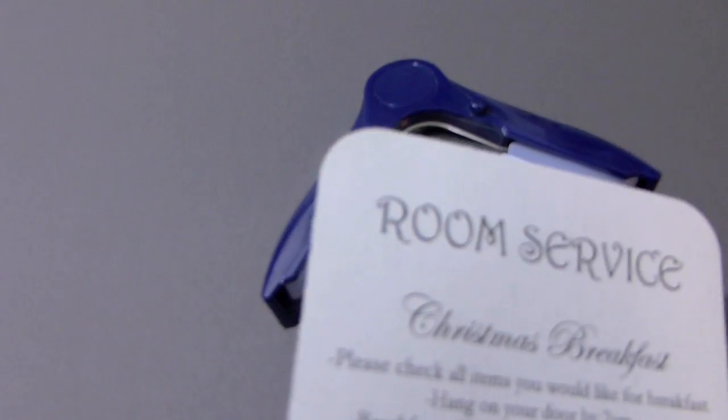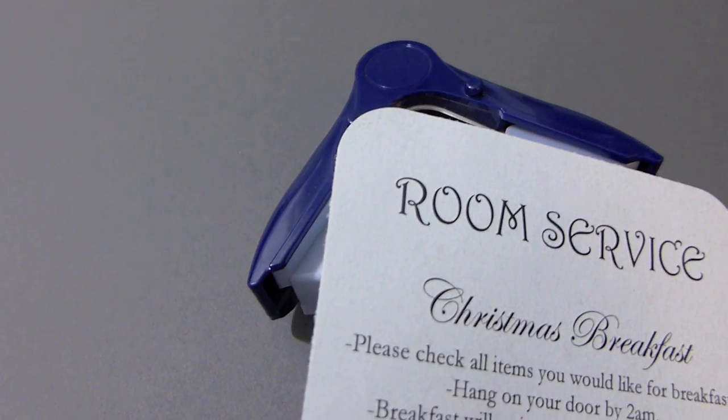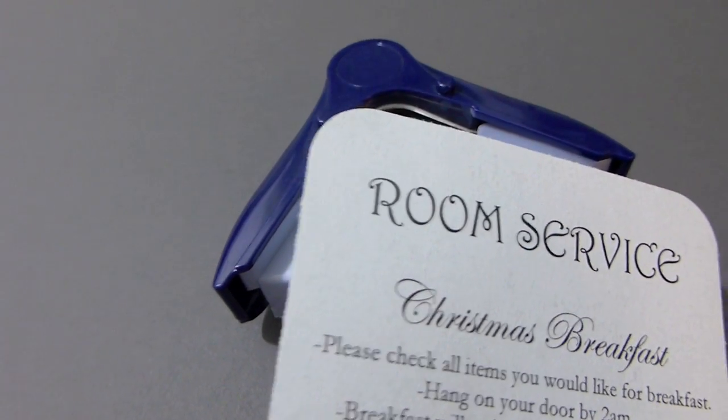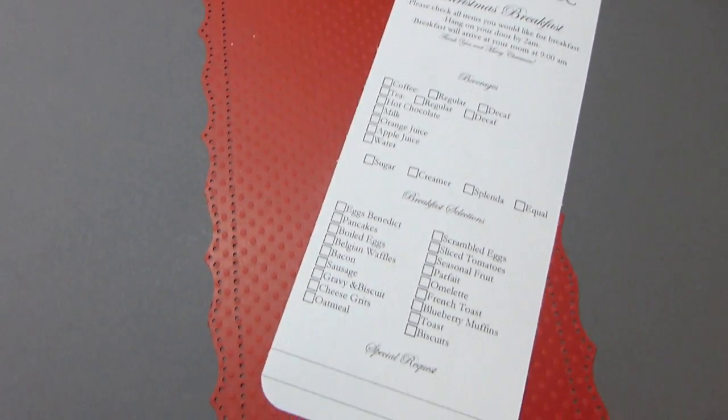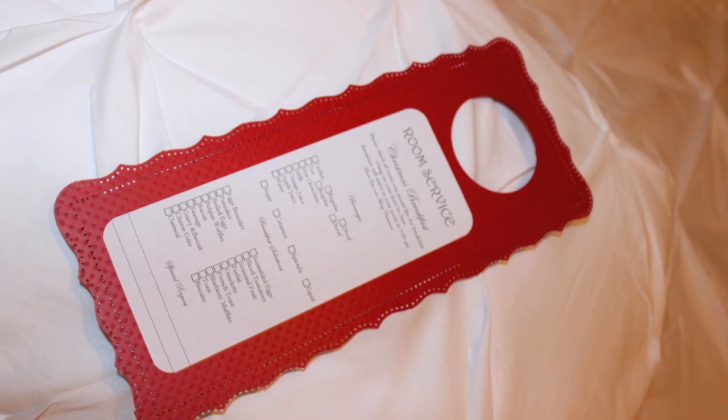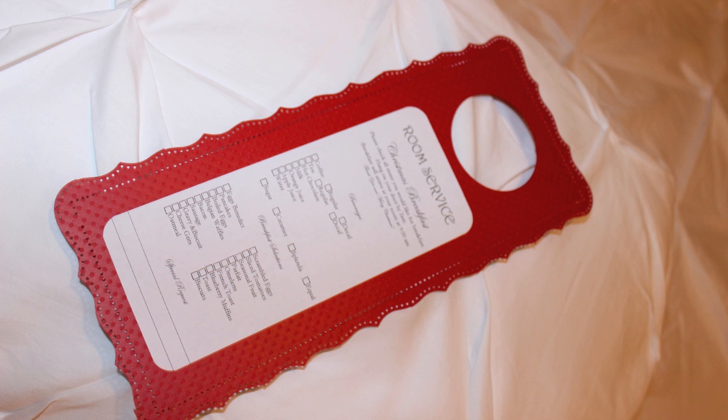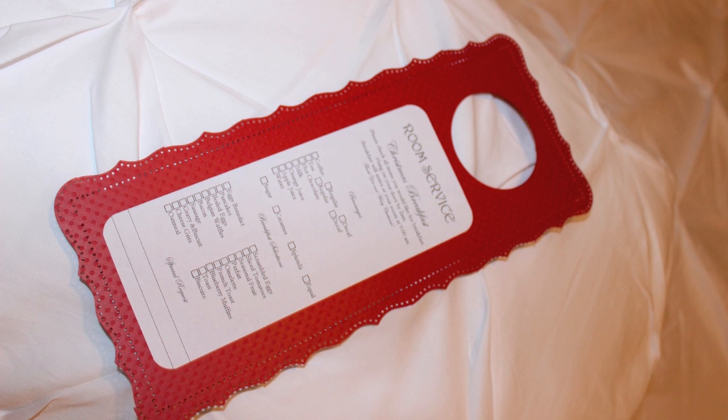The next thing you want to do is, once you print out your room service Christmas breakfast menu, you want to use your corner punch to round off the edges to give it a nice look. Then simply use your double-sided tape to tape it on and you're done. Very simple. I love how it looked and it was a lot of fun to do.